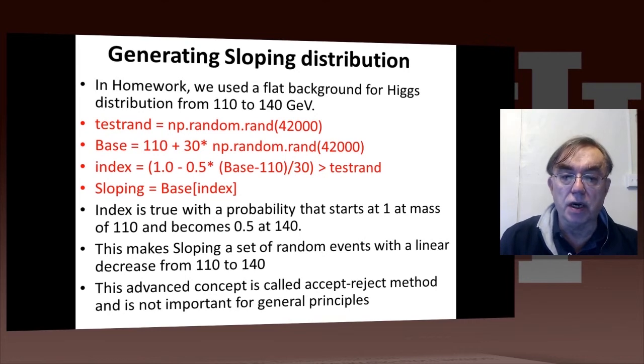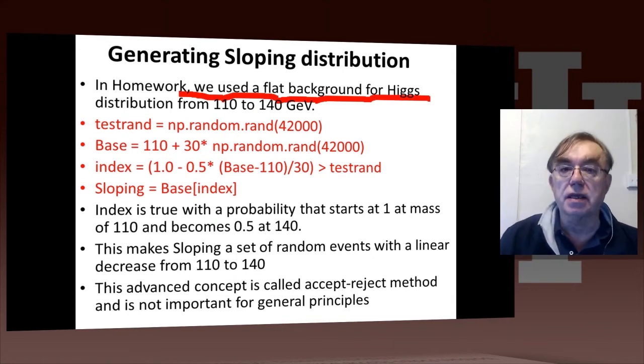You remember in the homework I used a flat background for the Higgs, and in fact I gave you too much background, because that flat background was certainly flat at the value of 110 GeV, whereas it's significantly reduced by about 25% when it's actually observed at 126.